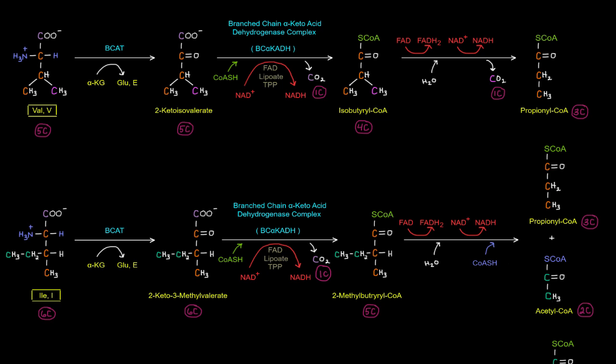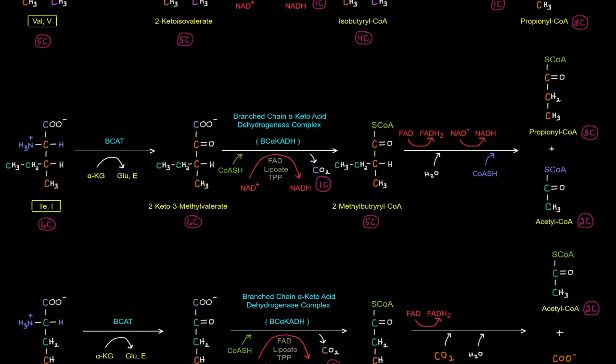And now we have this 2-methylbutyryl-CoA, and we'll have a few redox reactions. We're going to add a coenzyme A here. That coenzyme A will be added basically right here to make this part of the molecule come off as an acetyl-CoA. And then the orange carbons will end up in propionyl-CoA, which can go to succinyl-CoA and the TCA cycle. So that's valine and isoleucine.